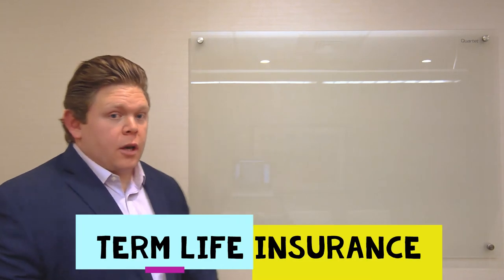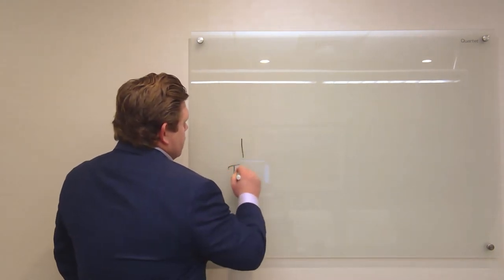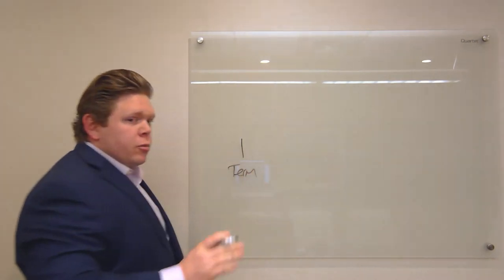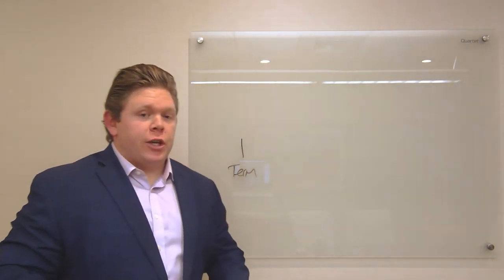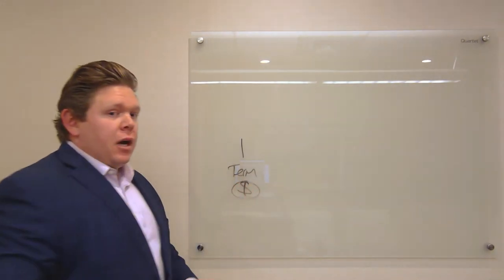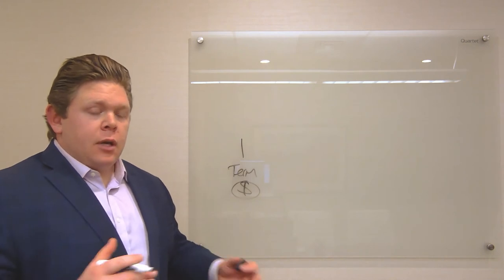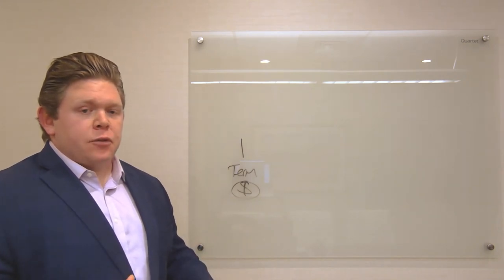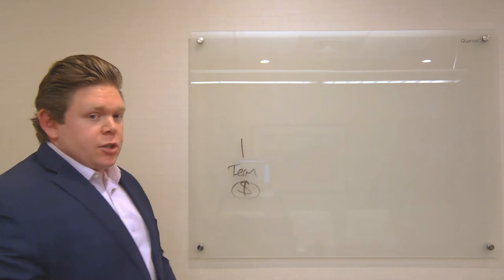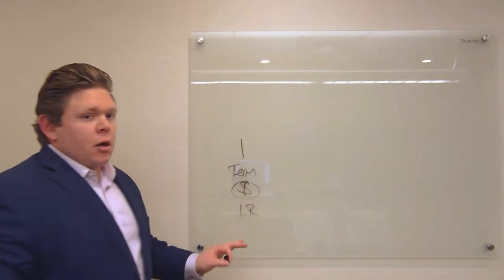So let's start with term life insurance. Here we have term life, and this once again is straight insurance. There is no cash value. You're buying this policy strictly for income replacement, that God forbid something to happen to you, a death benefit is going to pay out tax-free to beneficiaries to cover the bills. So I'm going to put IR here as income replacement.